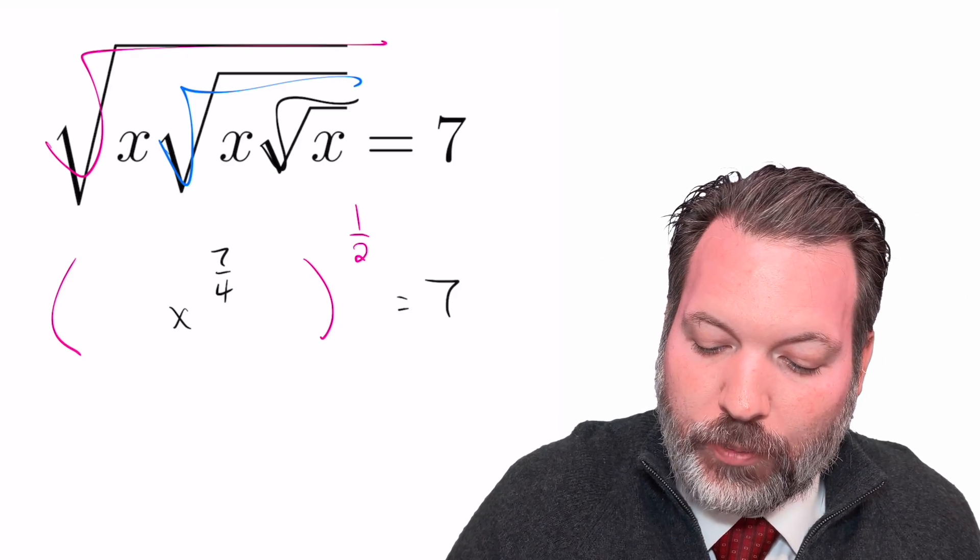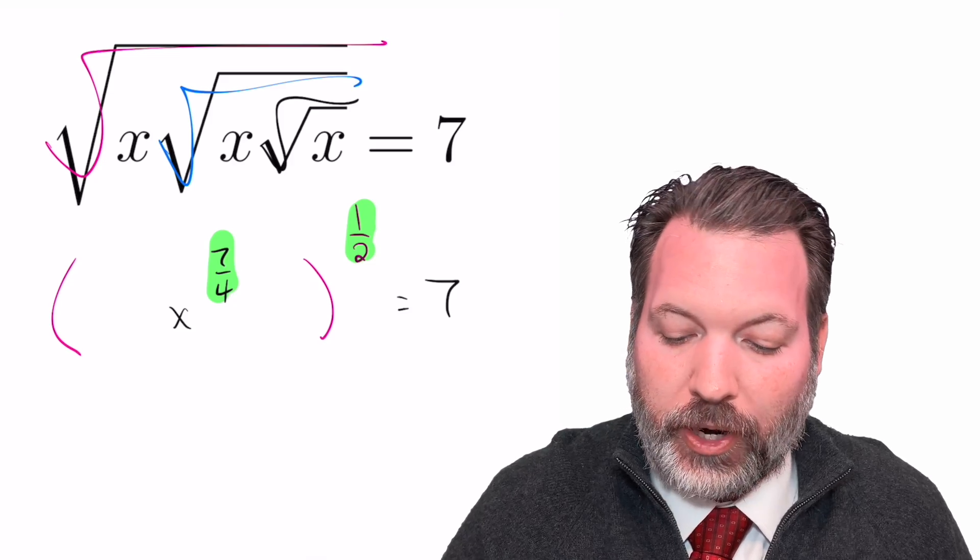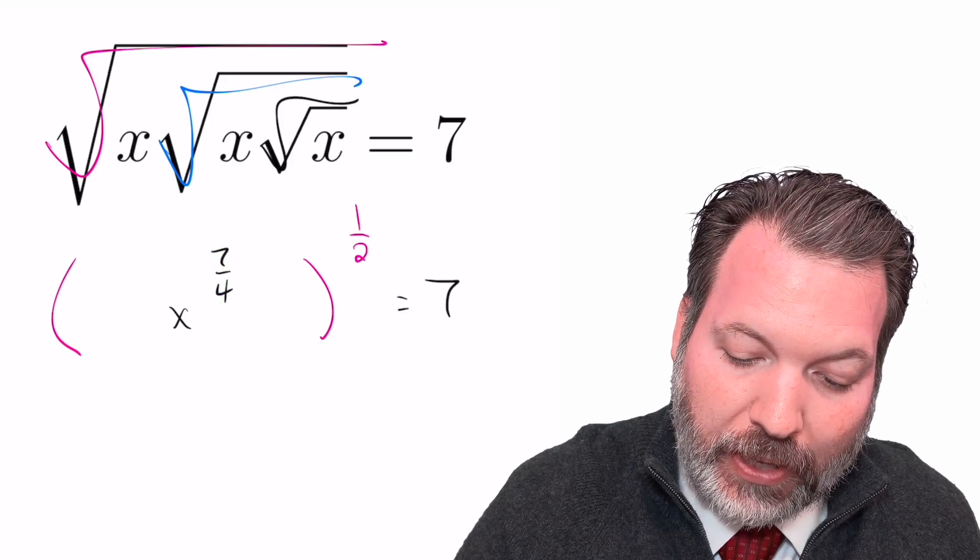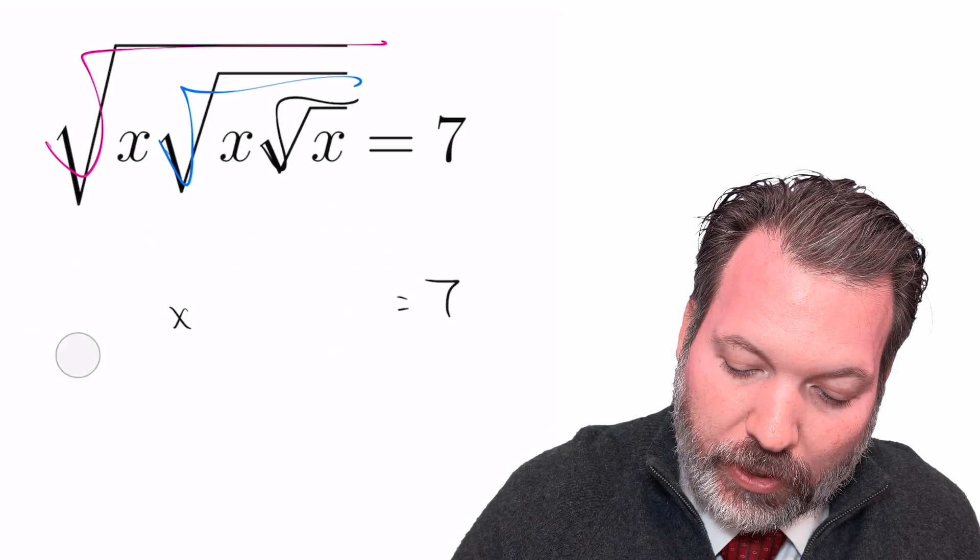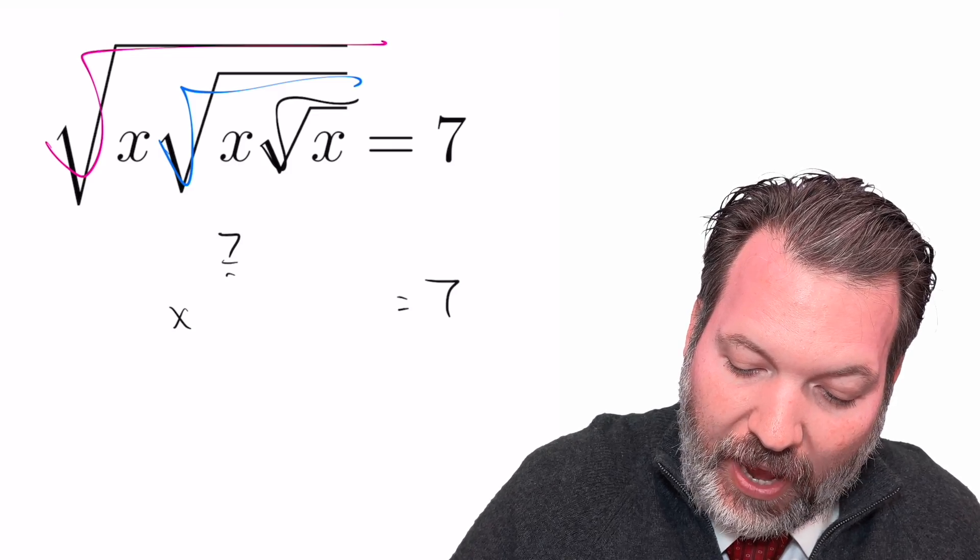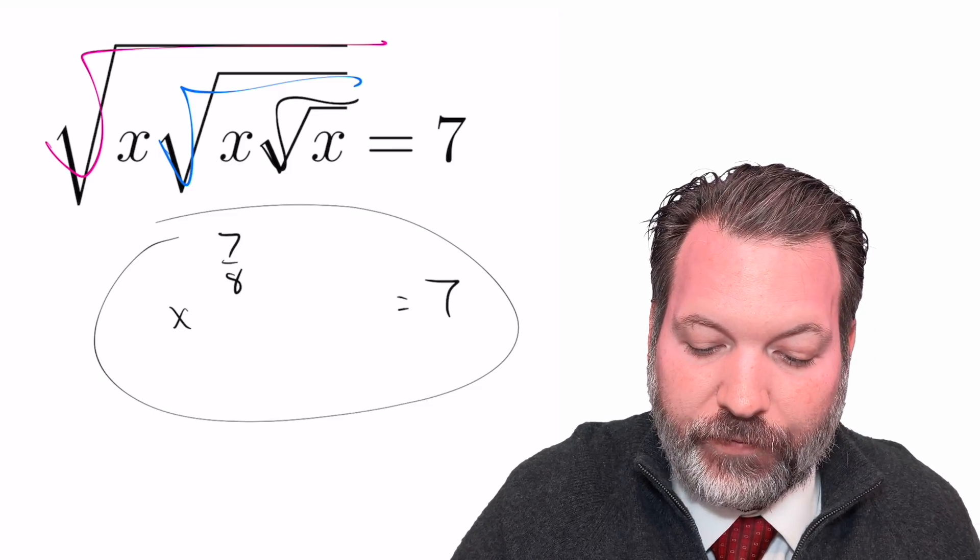And finally, one more time, we've got another exponent to exponent situation. Power to power means multiply, so seven fourths times one half gives us back seven eighths. Some unknown x to the seven eighths power is equal to seven.